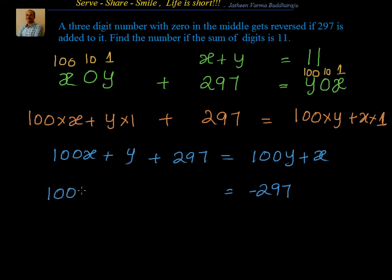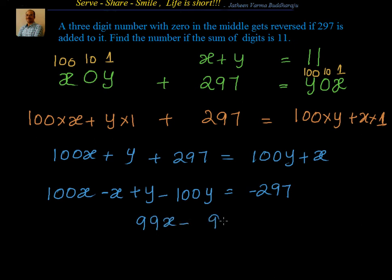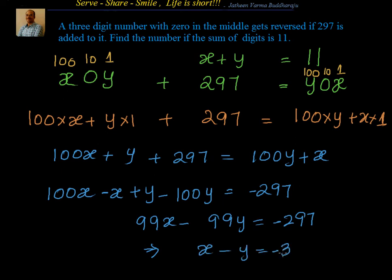I will have 100x, then x minus x gives minus x, and plus y minus 100y gives minus 99y. Simplifying, I get 99x minus 99y equals minus 297. Dividing by 99: x minus y equals minus 3.